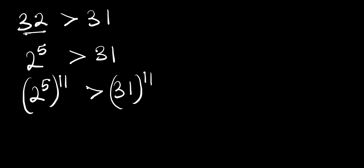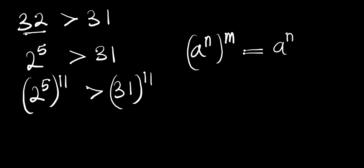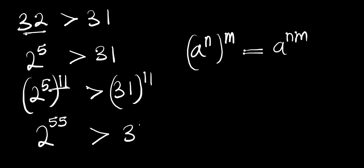Now let me apply this index rule: if you have a to the power of n, all to the power of m, this equals a to the power of n times m. So if I multiply these two exponents I'm going to have 2 to the power of 55. This simply means 2 to the power of 55 is greater than 31 to the power of 11.